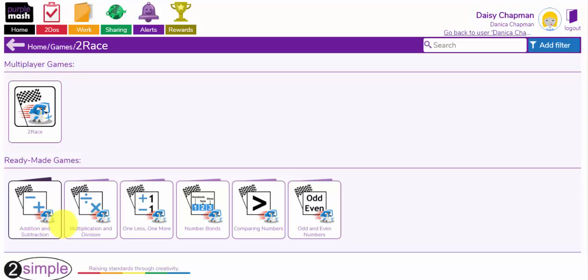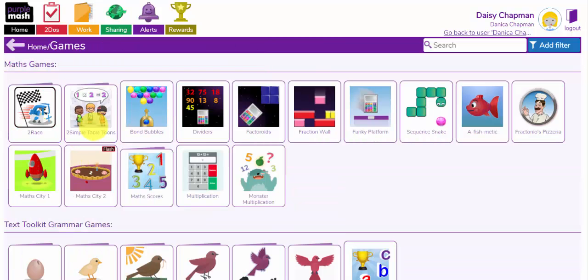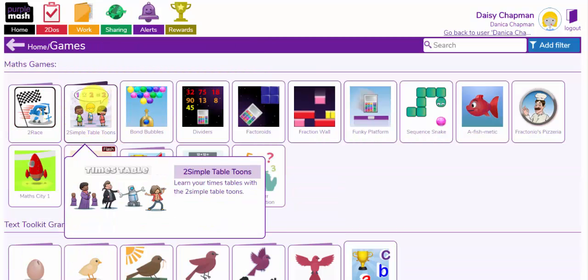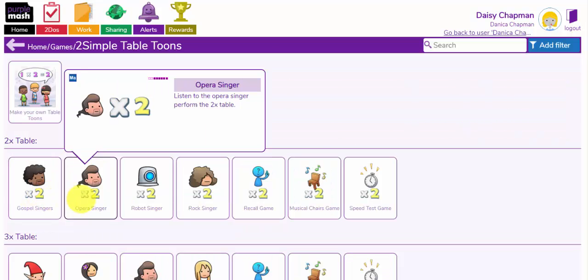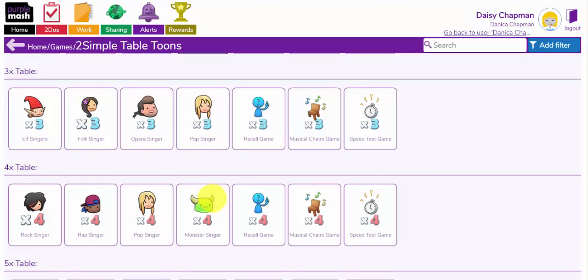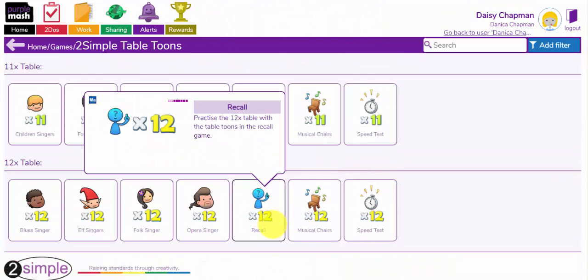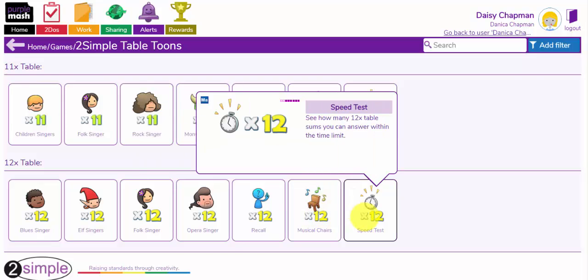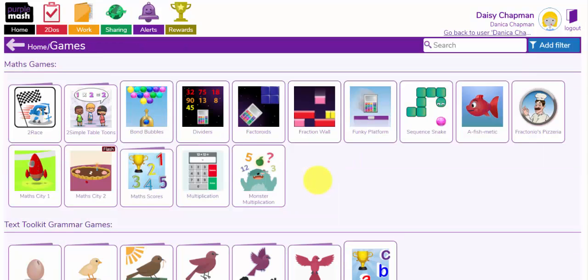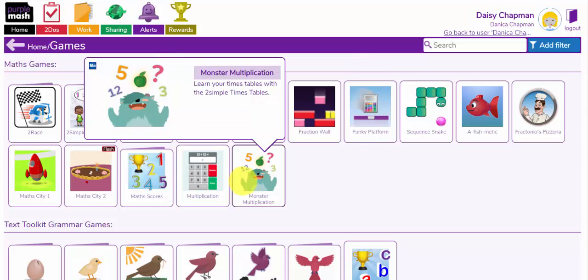So Two Race has some brilliant games. You've got Multiplication and Division. You also have, if you want to practice your times tables, you can use 2 Simple Table Tunes. You can sing along with the singers for any of the times tables up to 12. You can also practice your times tables here using the Recall, Musical Chairs and Speed Tests. Now if your children are in year 3, 4, 5 or 6, these two tools here will get your children practicing their times tables.